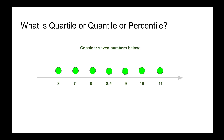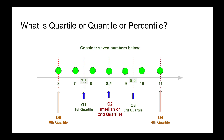Let's look at these seven data points arranged in increasing order from left to right, from three to eleven. If we divide this into four equal parts as shown by the red dotted lines, we get the median, which is Q2, the second quartile. On either side we have the first and third quartiles, Q1 and Q3, denoted here by 7.5 and 9.5. There are different ways to calculate these values, which we'll discuss shortly.